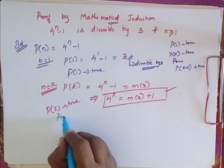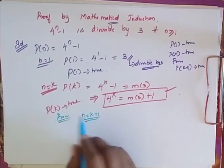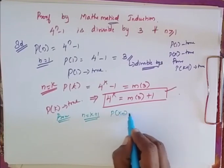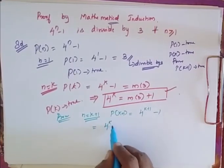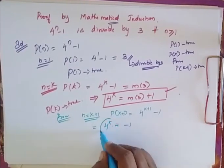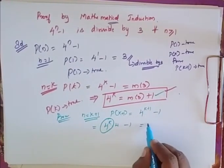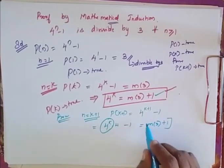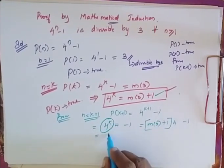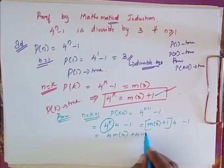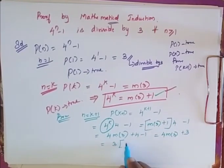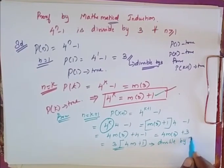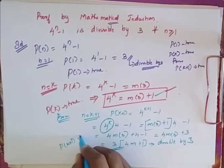Now I have to prove that it is true for n equal to K plus 1. So P of K plus 1 is equal to 4 power K plus 1 minus 1. In place of 4 power K I substitute 3M plus 1, so this equals 3M plus 1 into 4 minus 1. Expanding, I get 4M into 3 plus 4 minus 1, which equals 4M into 3 plus 3. Taking 3 as common factor gives 3 times 4M plus 1, which is divisible by 3. So P of K plus 1 is also true.